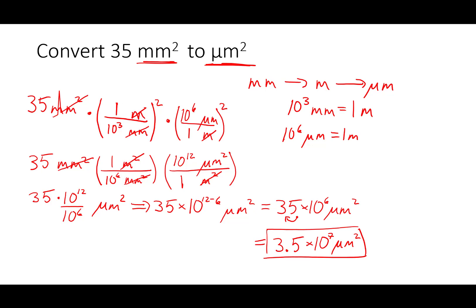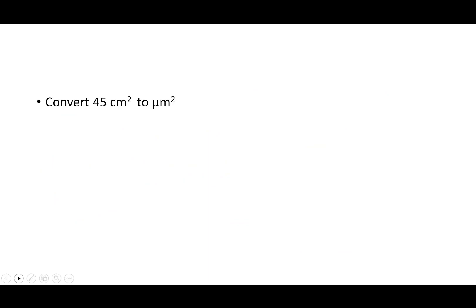I'm going to do one more example, and in this next example I'm going to look at some cubed units. Let's do a more interesting example: convert 12 nanometers cubed to centimeters cubed. We're going to do the same thing we did before. We have nanometers and we need to get to centimeters. I don't know the conversion between nanometers cubed and centimeters cubed, or even between nanometers and centimeters. So I'm going to go from nanometers to meters to centimeters, and we're going to base our conversion factors off of these linear conversions, then cube them to cancel out the cubed units.